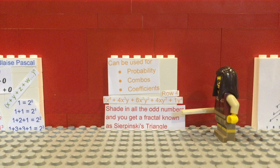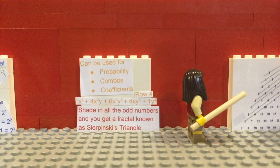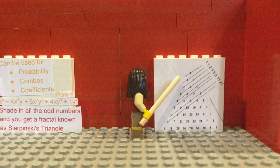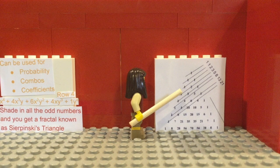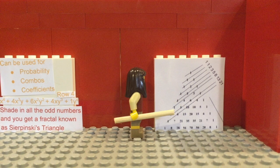A fun pattern is that if you shade in all the odd numbers, you get a fractal called Sierpinski's Triangle. This shows the golden ratio in the triangle. If you add up the numbers each line goes through, you end up with a Fibonacci sequence. And it continues.